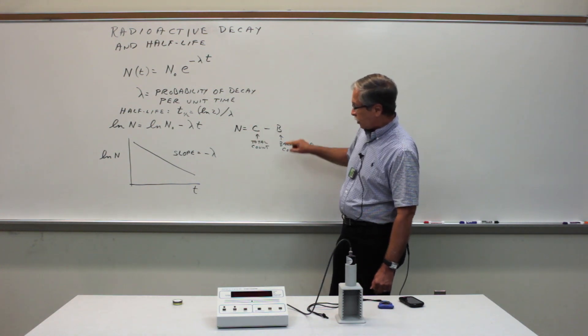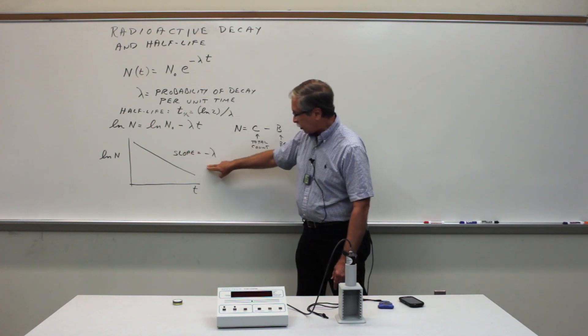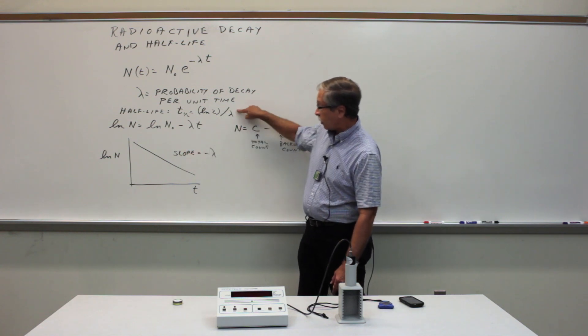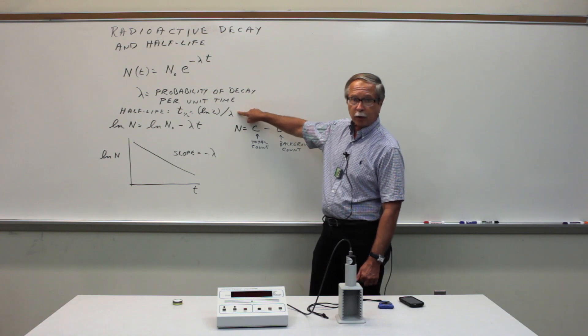That's the basic idea. Then we get the decay probability from the slope and then calculate the half-life from the decay probability.